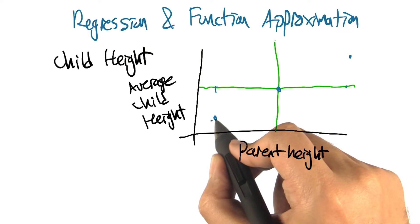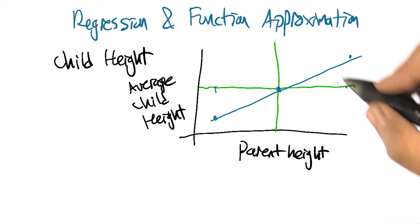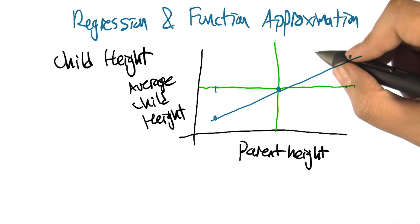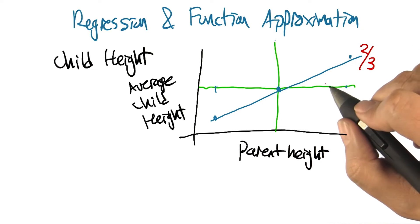And it turns out that you have this very nice linear relationship between these quantities. And there's an important aspect to this, which is that the slope of this line is less than one, it's two thirds. If the slope of this line was one, what would that mean, Charles?